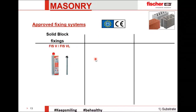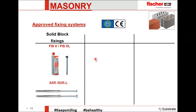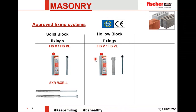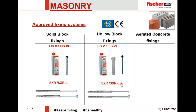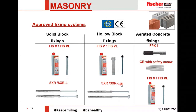For solid blocks, we have two types of solutions: a chemical solution which is FIS V or FIS V Plus L, and a nylon fixing known as XXR or XXR L. For hollow block fixing, we also have two solutions: the chemical FIS V or FIS V Plus L used with a sleeve, and also XXR or XXR L. For the newer aerated concrete blocks, we have three types: steel fixing known as FPX-I, a nylon fixing GB with safety screw, and chemical fixing FIS V or FIS V Plus L.